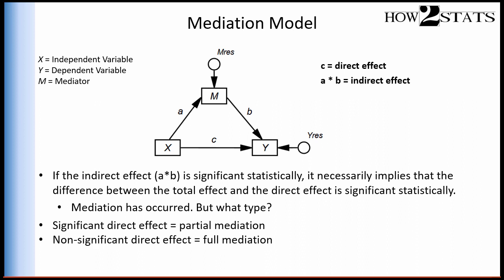To recap: we conduct mediation analysis to understand whether the association between X and Y can be partly or fully accounted for by a third variable, the mediator. If we uncover a significant indirect effect between X and Y through M, we have evidence for mediation. If the direct effect remains significant, we have partial mediation. If the direct effect is now statistically non-significant compared to the total effect, we have evidence for full mediation. I encourage you to follow this video up by watching a step-by-step example using all these key terms and concepts.